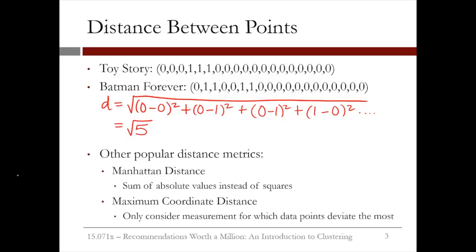In addition to Euclidean distance, there are many other popular distance metrics that could be used. One is called Manhattan distance, where the distance is computed to be the sum of absolute values instead of the sum of squares. Another is called maximum coordinate distance, where we only consider the measurement for which the data points deviate the most.